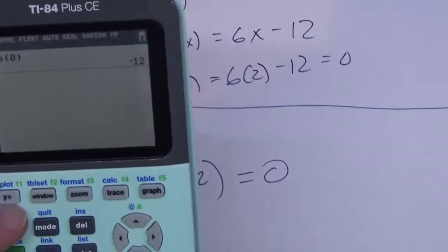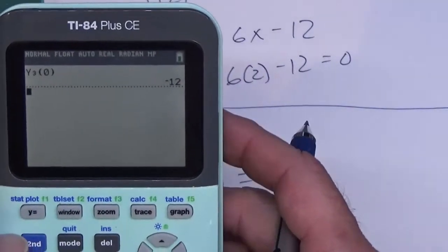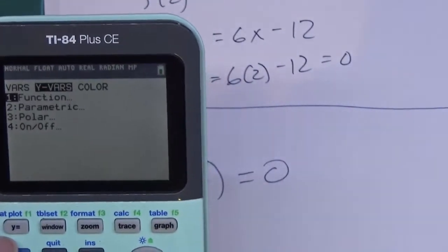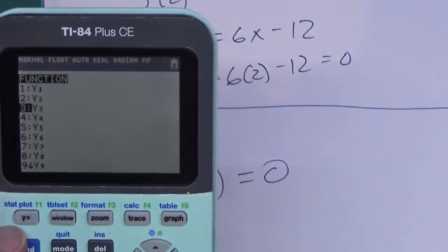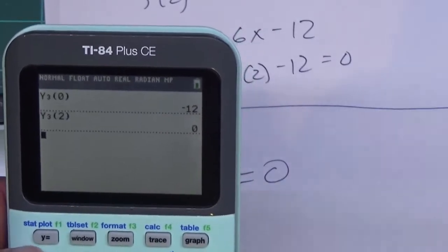Because I didn't do what I wanted to do - y3(0), I wanted to do y3(2). So let me press vars over to y vars, enter, go down to y3, put parentheses 2, close parentheses, enter, and it is giving me 0.